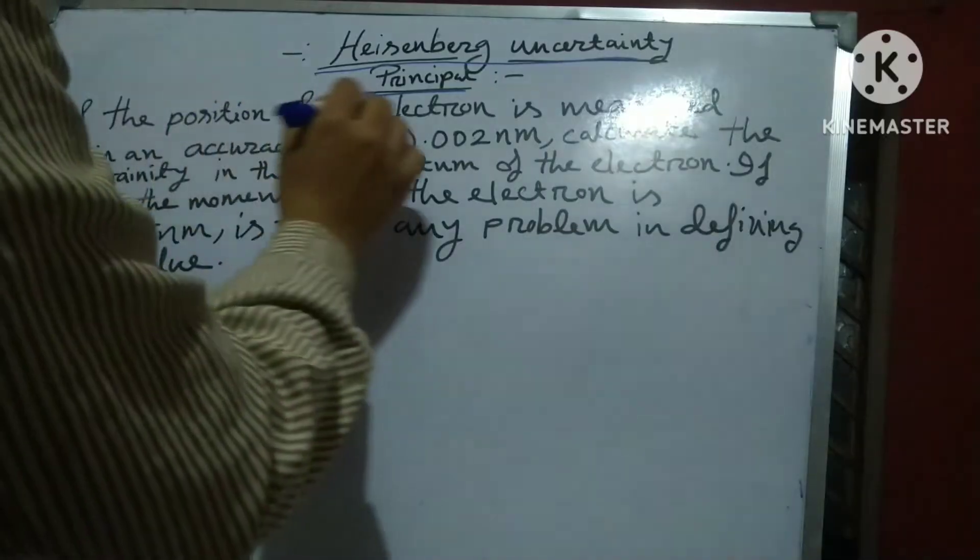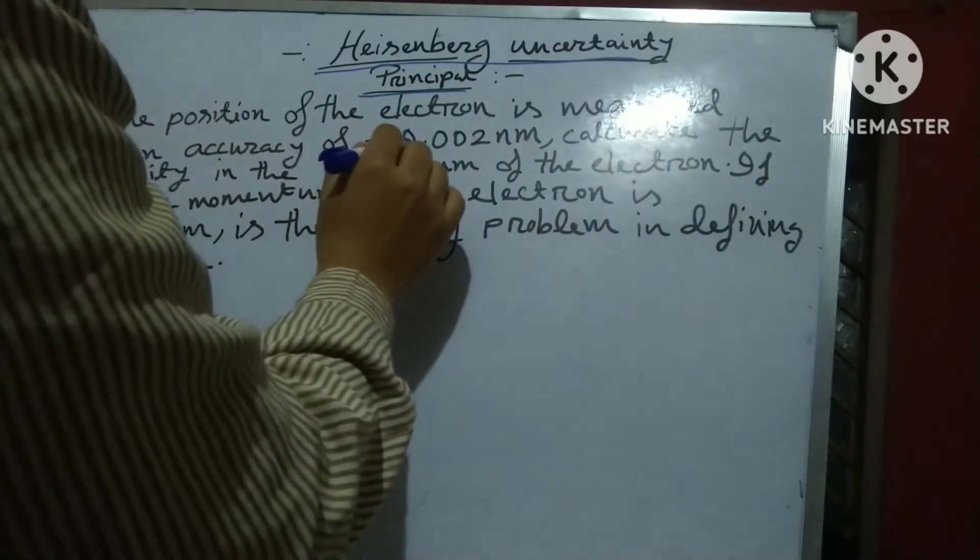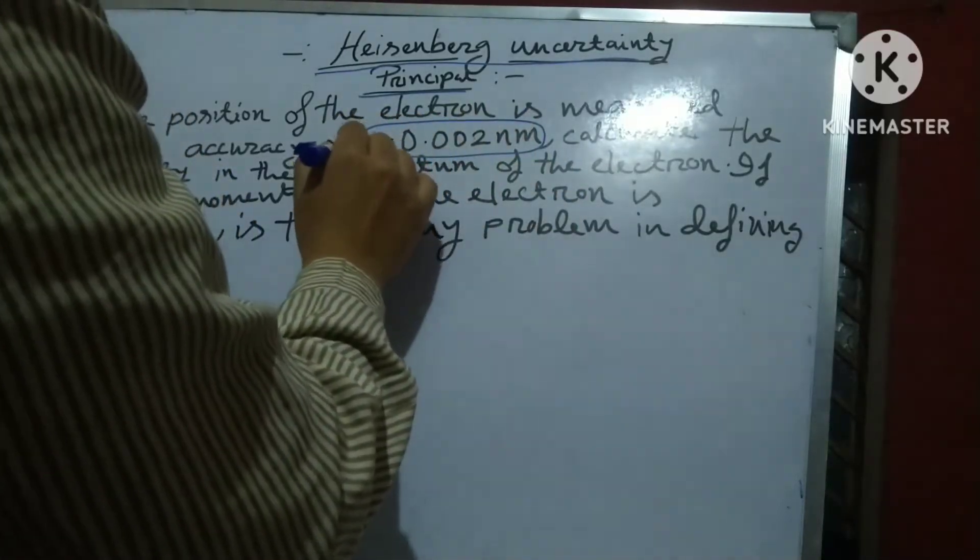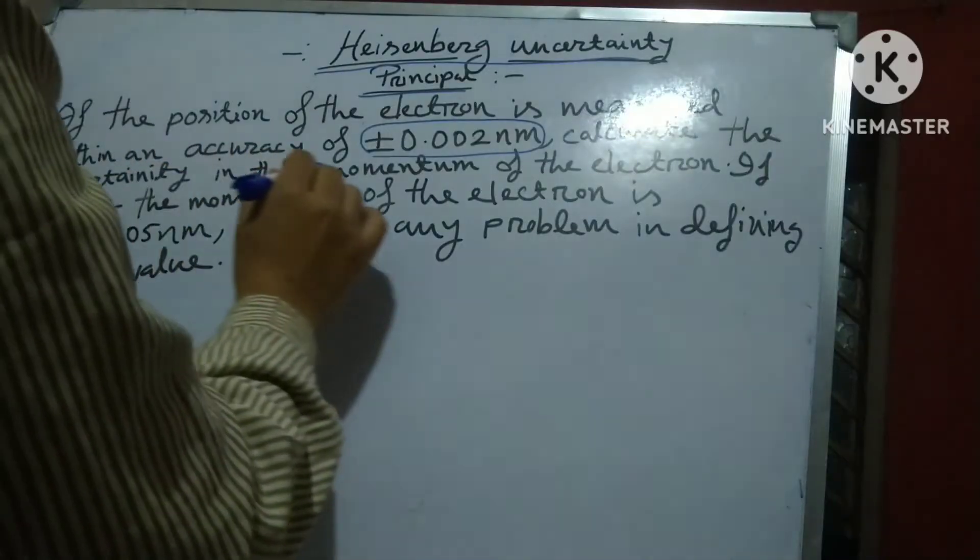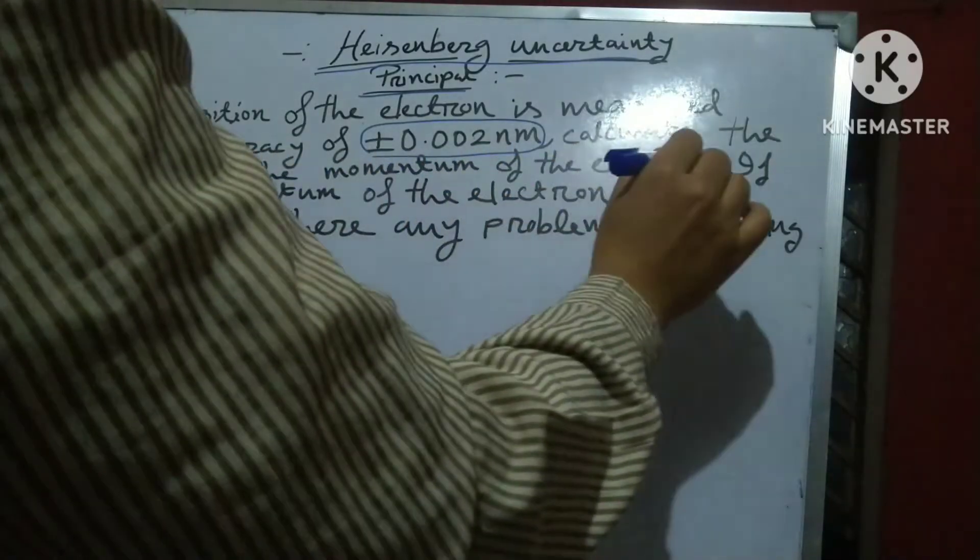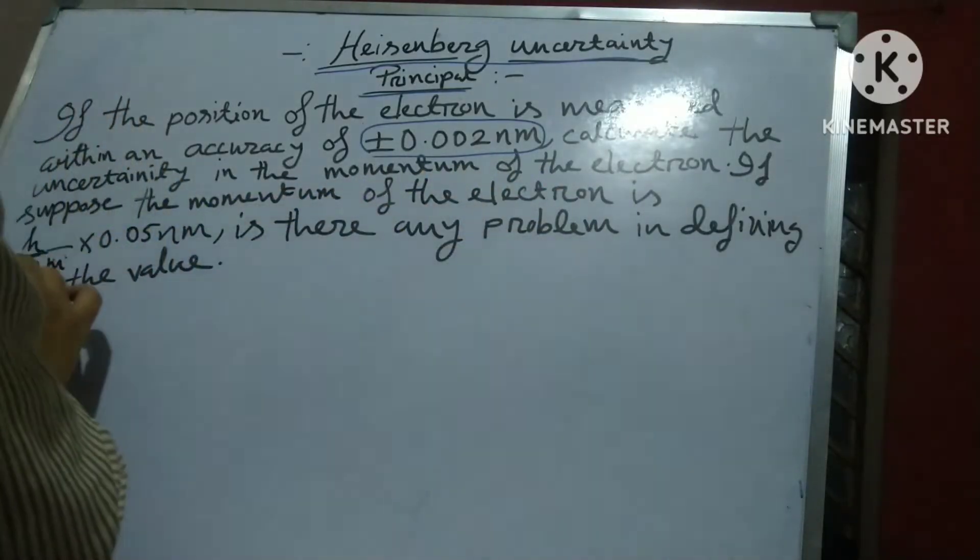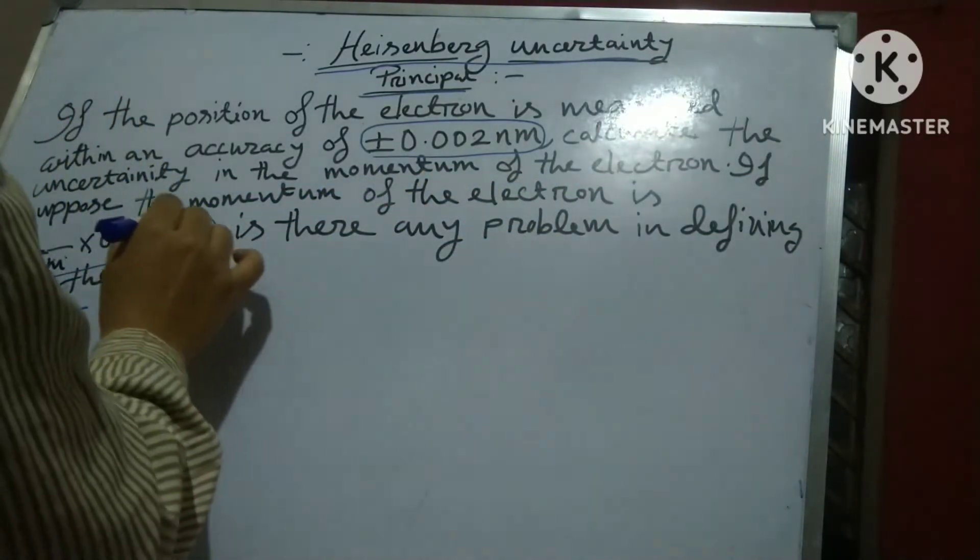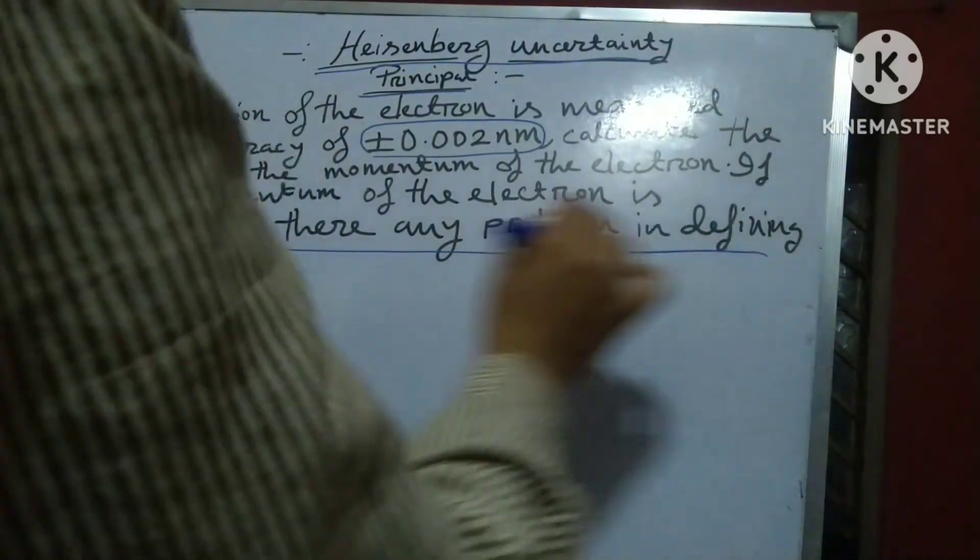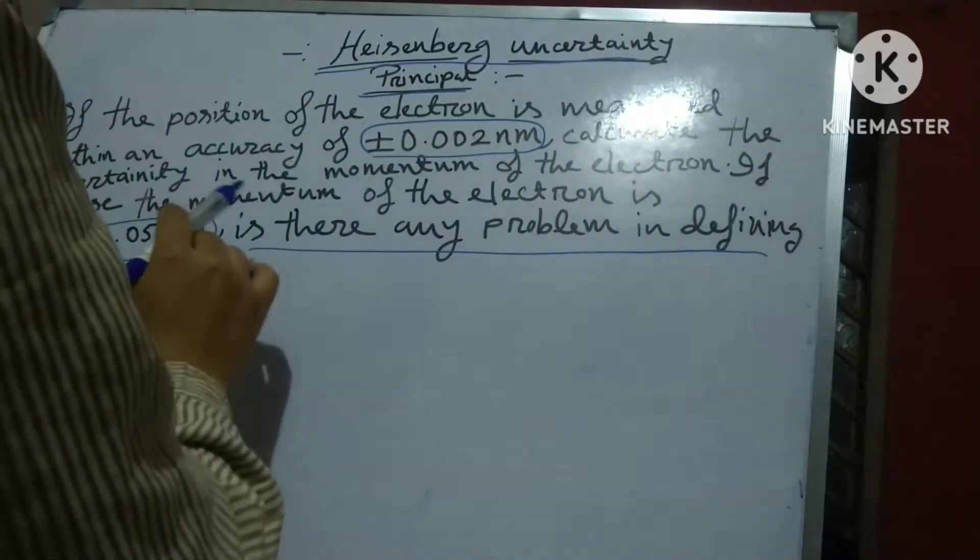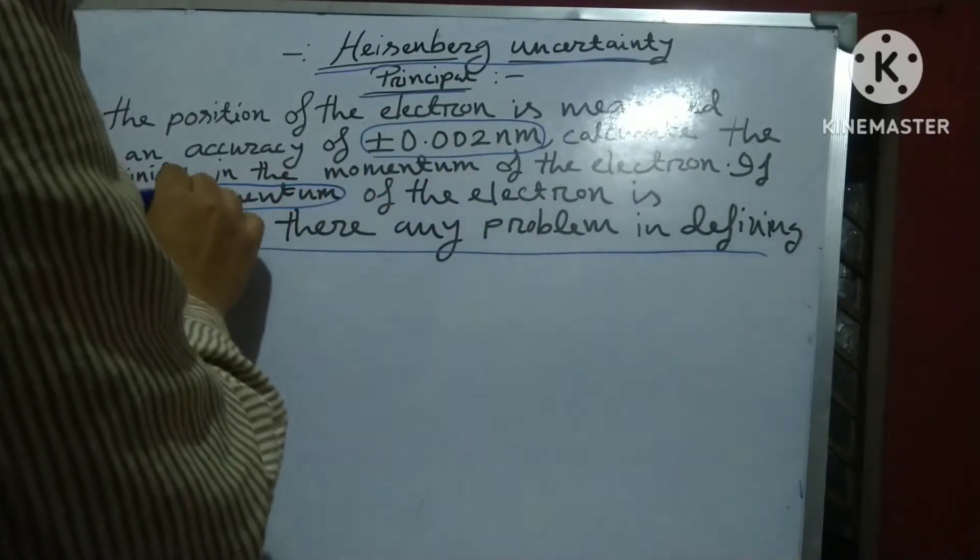If the position of the electron is measured within an accuracy of 0.02 nanometer, calculate the uncertainty in the momentum of the electron. If suppose the momentum of the electron is h divided by 4πm, 0.05 nanometer, is there any problem in defining the value? So momentum is told this way.